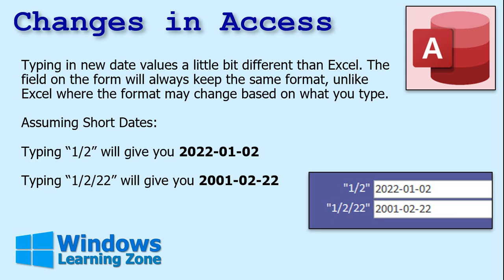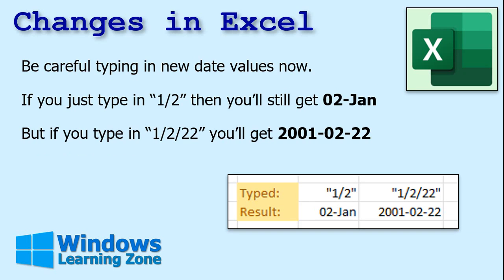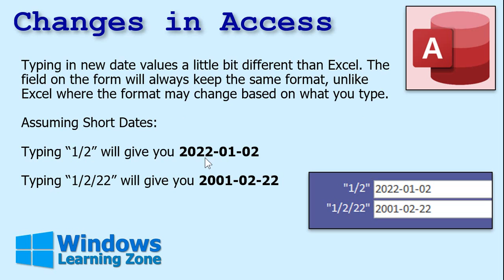Typing in new date values in Access is going to be a little different from Excel. The field on the form will always keep the same format, unlike Excel where the format can change based on what you type. In Excel, when you type in 1-2, you still get January 2nd. In Access, if you type in 1-2, it gives you that format — the value is still the same, but what's displayed is the short date Access has. Access is a lot more structured and rigid, whereas Excel tries to adapt the format to what it thinks you want.